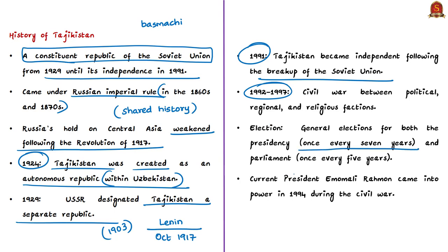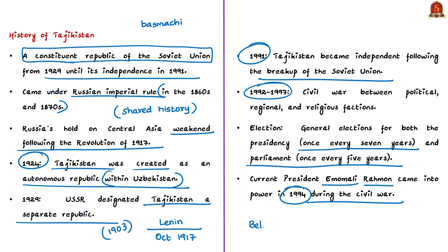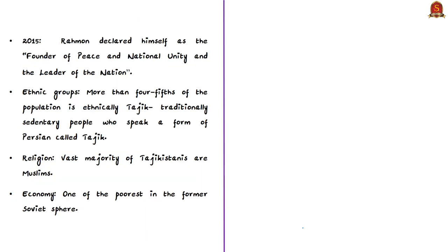Tajikistan holds general elections for the presidency once every seven years and for parliament members once every five years. However, there are allegations that the electoral system is surrounded by irregularities and abuse, and the results are reported to be mostly not free or fair. Current president Emomali Rahmon came to power in 1994 during the civil war — a parallel can be drawn with Belarus in Europe. In 2015, Rahmon declared himself the founder of peace and national unity and leader of the nation, and constitutional amendments ratified in a referendum granted him limitless terms and lifelong immunity.